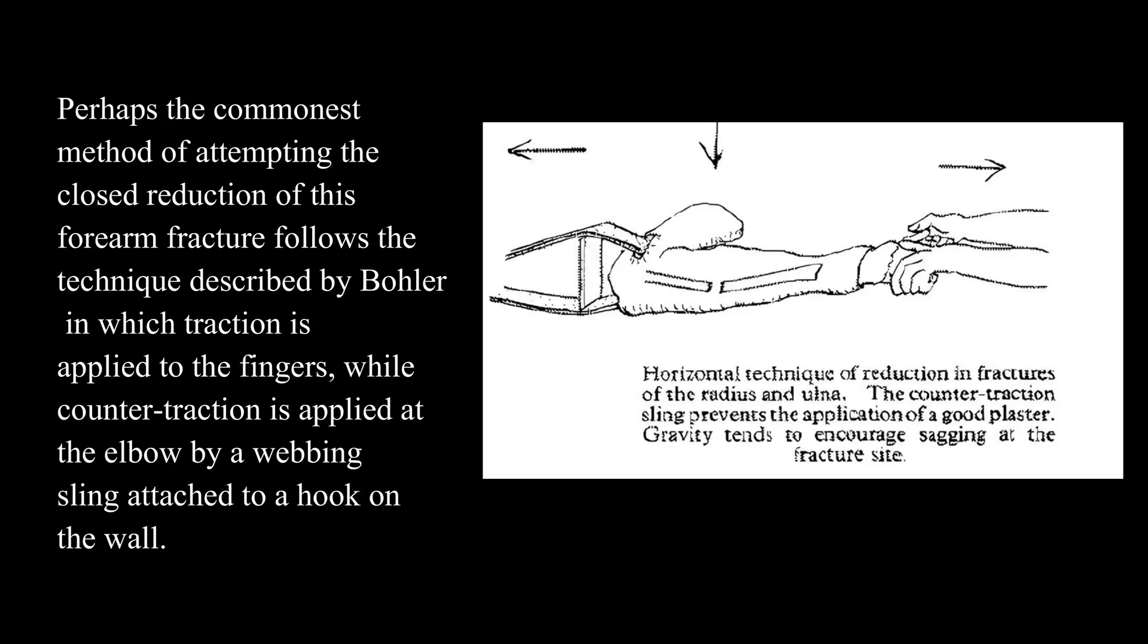Perhaps the commonest method of attempting the closed reduction of this forearm fracture follows the technique described by Bohler, in which traction is applied to the fingers while counter-traction is applied at the elbow by a webbing sling attached to a hook on the wall.